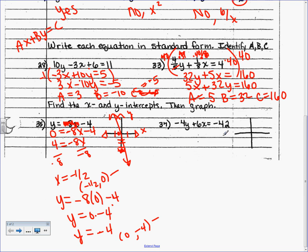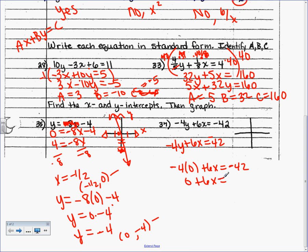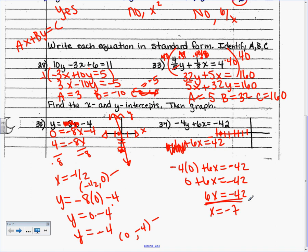For the next equation, same approach — to find x, set y to 0. That gives 6x = −42, so divide both sides by 6: x = −7. Go ahead and plot that on the x-axis at −7. The covering-up shortcut also works here: to find x, cover up the y term and you jump straight to the simplified equation.